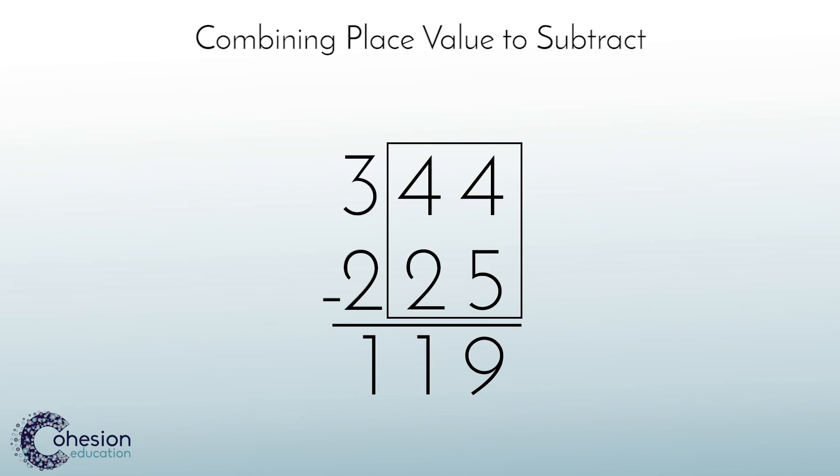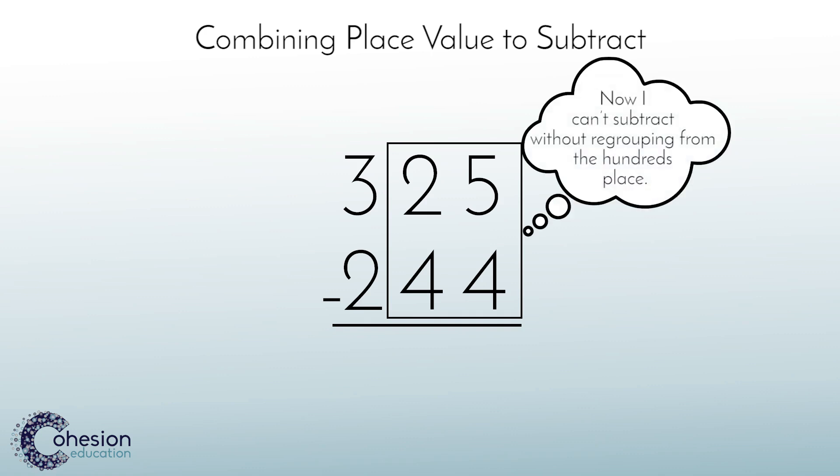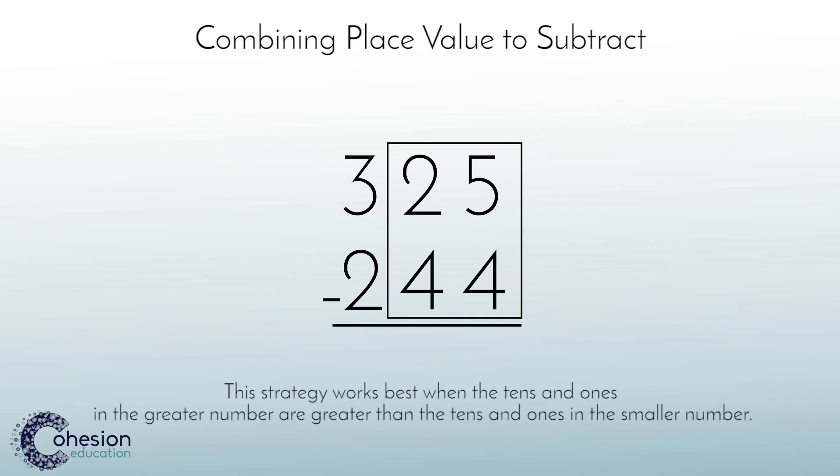This strategy can get a little tricky, as sometimes the tens and ones in the top number are smaller than the tens and ones in the bottom number. Suppose we had to subtract 325 minus 244. Now the process doesn't unfold quite as easily. Here, we would need to regroup one of our hundreds. At this point, this strategy really isn't making life any easier than the traditional place value subtraction. Therefore, if the tens and ones on the top number are not greater than the tens and ones in the bottom number, I recommend that you not proceed with this method and select either place value subtraction or our next strategy, which is the break apart strategy.